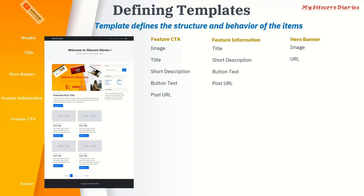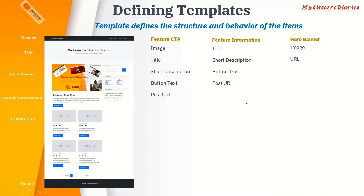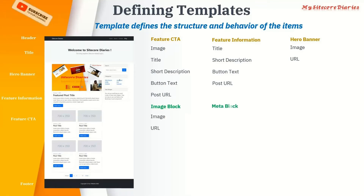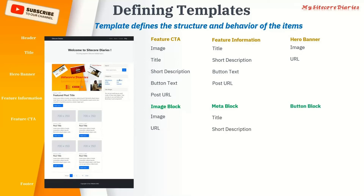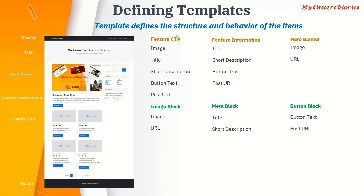Now if you observe, there is some information which is common — like short description, button text, URL, and image. If you separate those out, you can create an image block containing image and URL, a meta block containing title and short description, and a button block containing button text and post URL. These six fields cover all three modules. The second activity is to find all fields required, then find the distinct common fields.